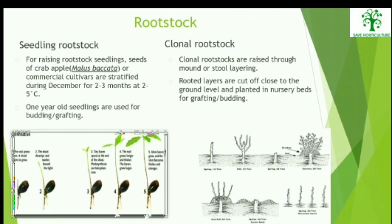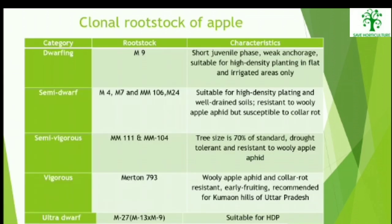Clonal Root Stocks: The clonal root stocks are raised through mound or stool layering. The rooted layers are cut off close to the ground level and planted in nursery beds for grafting or budding. The clonal root stock M9 is characterized by a short juvenile phase, weak vigour, and is suitable for high-density planting in flat and irrigated areas only.